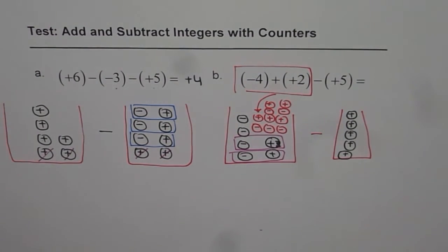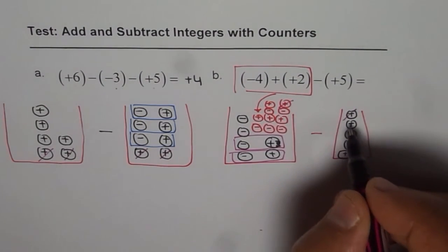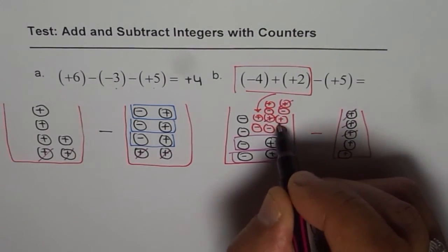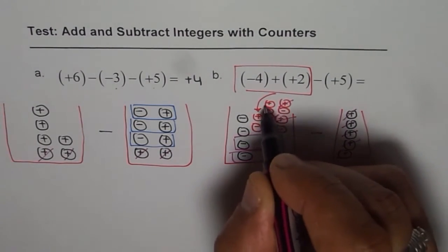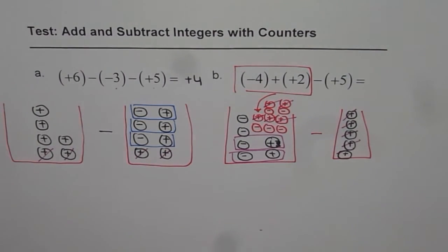So we added 5 zeros here. Once you add 5 zeros, now you can take away these 5. So 1, 2, 3, 4 and 5.